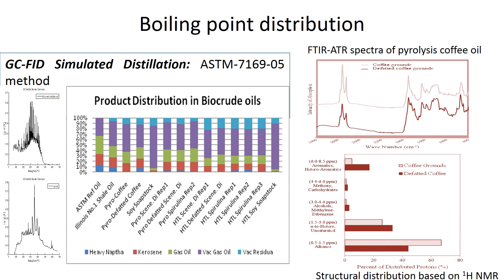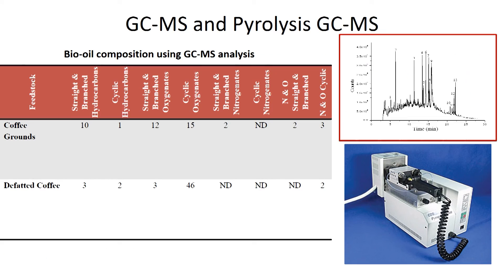The GC-FID SIMDIST method used at ISTC provides boiling point distribution, giving information on kerosene, gasoline, diesel, and lube-base oil present in these fuels. GC-MS provides compound type distribution in these bio-oils. Pyro-GC-MS can be used to simulate pyrolysis on a small scale and is currently used for product optimization.